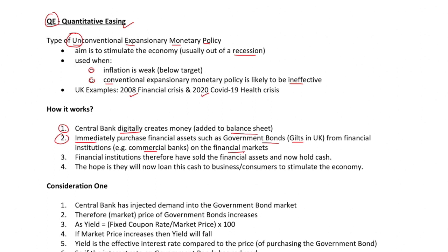Basically, they've created cash and used it to buy gilts from financial institutions. That means the financial institutions will now be holding this cash. In step three, the hope is that those financial institutions — commercial banks — will loan this cash out to businesses or consumers. The idea is that if they do this, it will help to stimulate the economy.